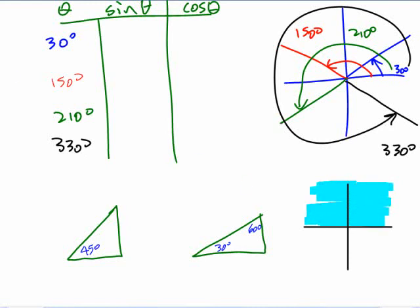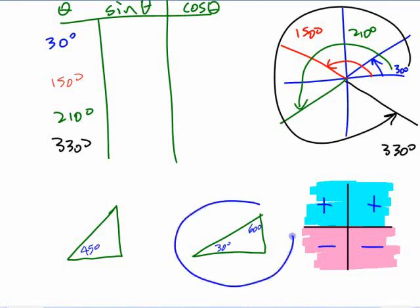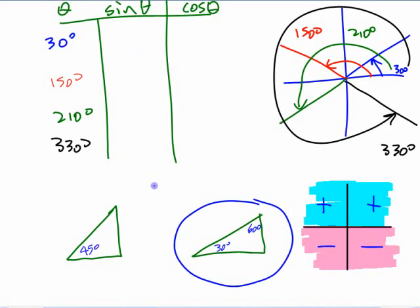So sine is positive above the axis here. That's where sine is positive because the y coordinate is positive up there. Sine is negative down here because that's where the y coordinate is negative. So if you combine those two facts, if you know you can come up with the exact value using the triangle and you know where it's positive or negative, you can pretty quickly fill these in.